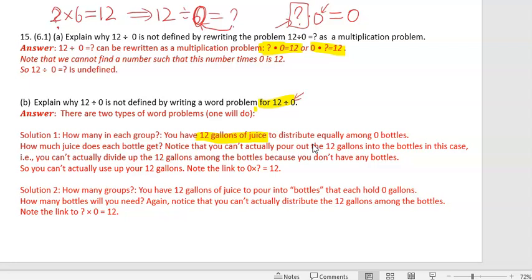And we cannot answer that question. Again, because there are no bottles. And that means we cannot really pour the juice into anything. So we cannot answer the question how many gallons are in each bottle. So that's a word problem to explain why this has no answer. It's undefined.